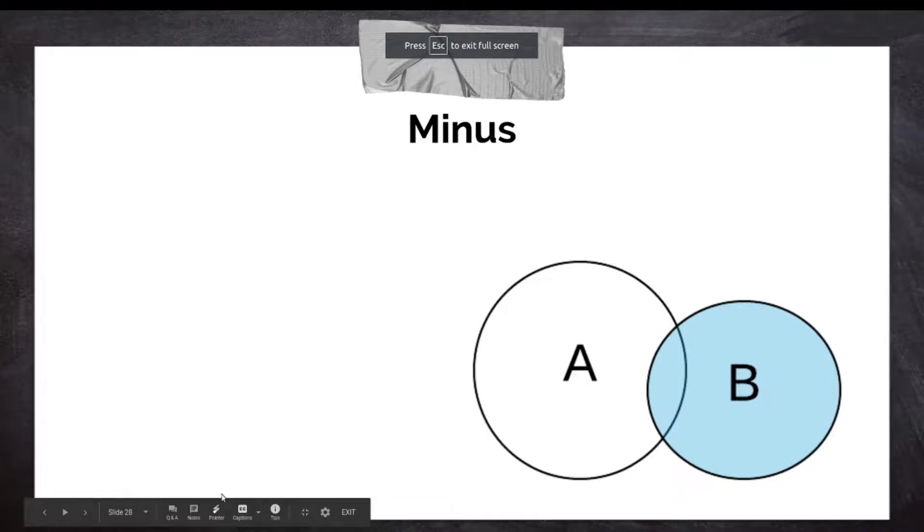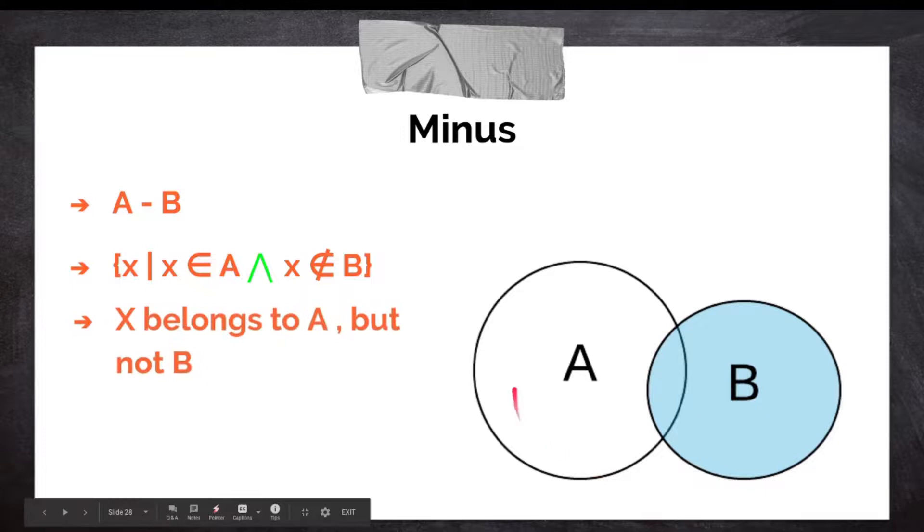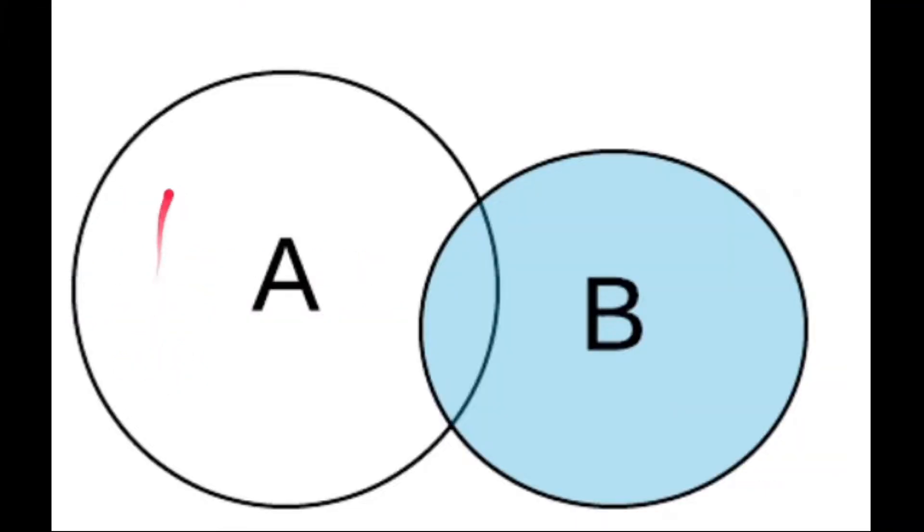Minus A minus B. If X is part of A minus B, then X is an element of A, but it's not an element of B. So this part right here in white is going to show you A minus B. All the elements of A that are not contained in B. X belongs to A, but not B.